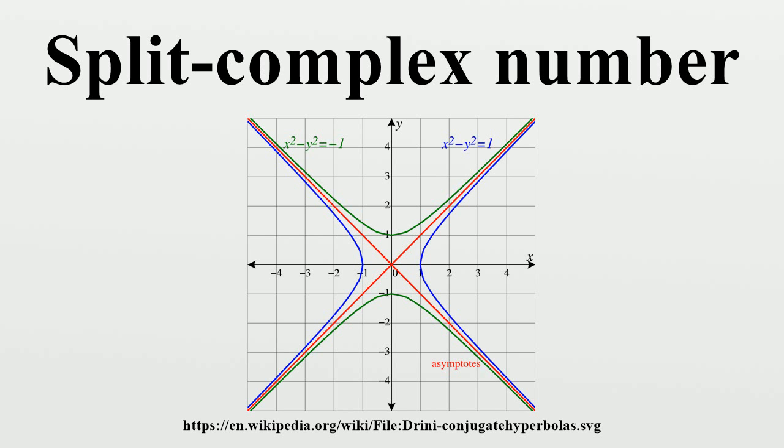Another expression for the modulus is |z|² = ⟨z,z̄⟩. Since it is not positive definite, this bilinear form is not an inner product. Nevertheless, the bilinear form is frequently referred to as an indefinite inner product.